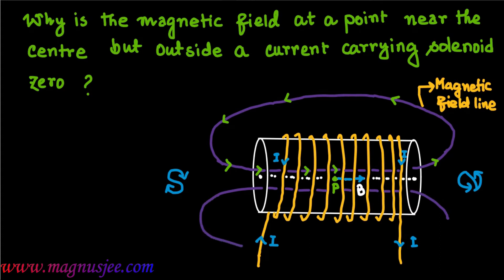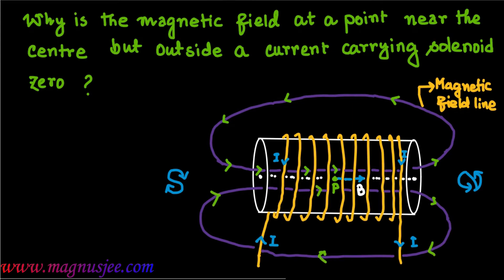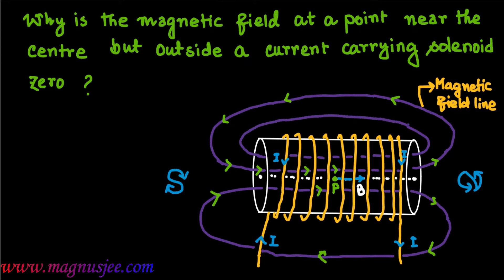Another magnetic field line is drawn in the lower portion of the solenoid. It is also a closed line with direction from south pole to north pole inside, and from north pole to south pole outside the solenoid. Additional closed magnetic field lines follow the same pattern with the same directions.